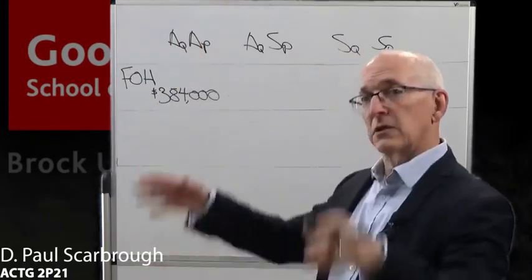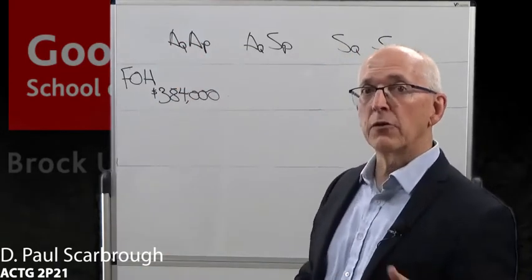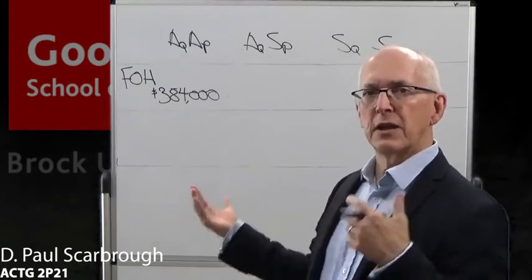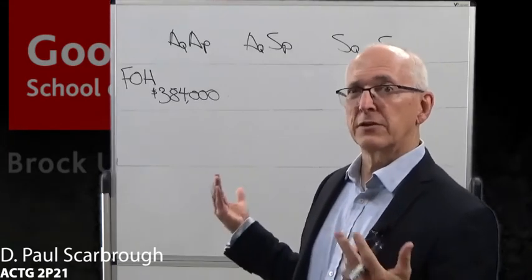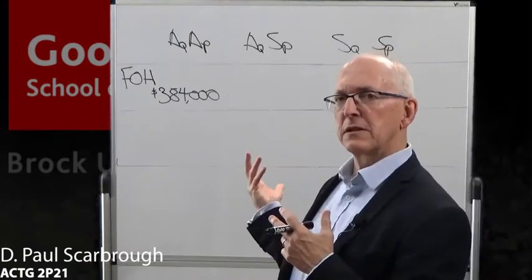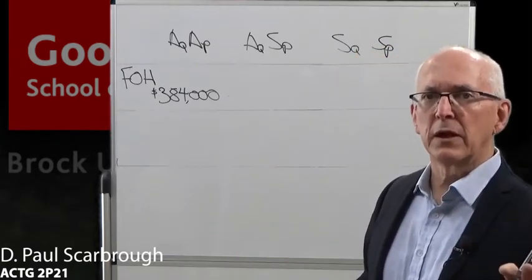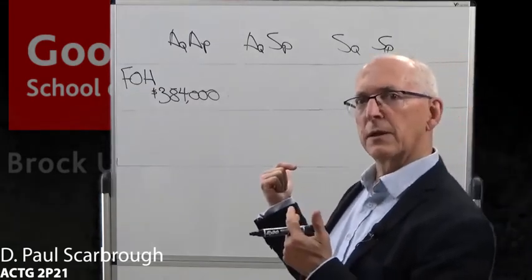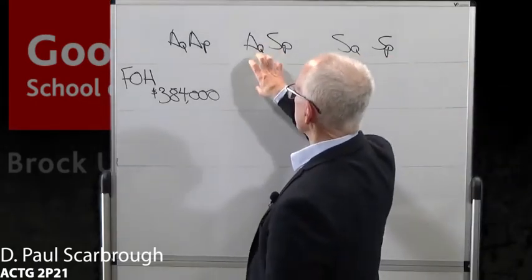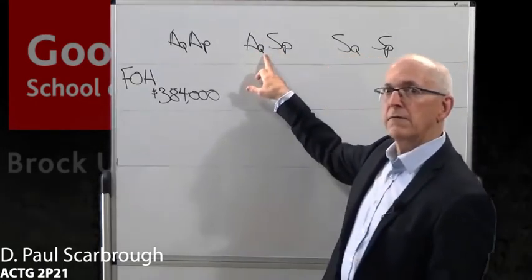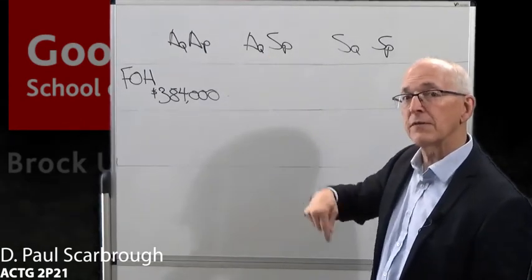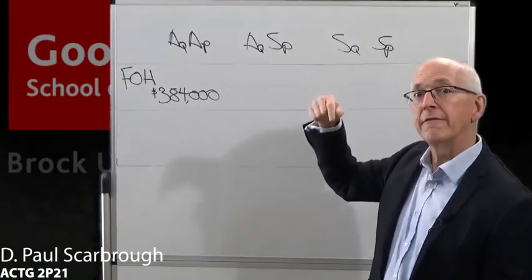One reason I keep using this table version rather than just formulas is that it helps you understand flexible budgeting and the standard cost column income statement a little bit better. You can see this and understand it, and you will be fine with the formulas. What we have is this: the AQ for fixed overhead does not flex — this AQ for FOH does not have the same definition as the AQ for any variable cost. Fixed costs do not adjust for volume.